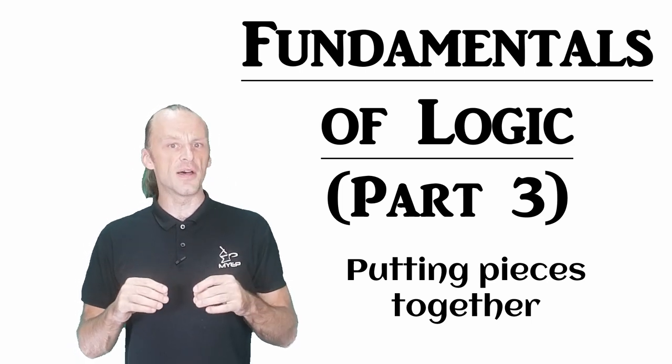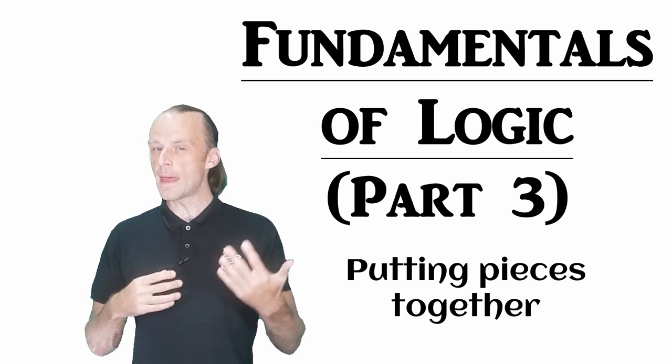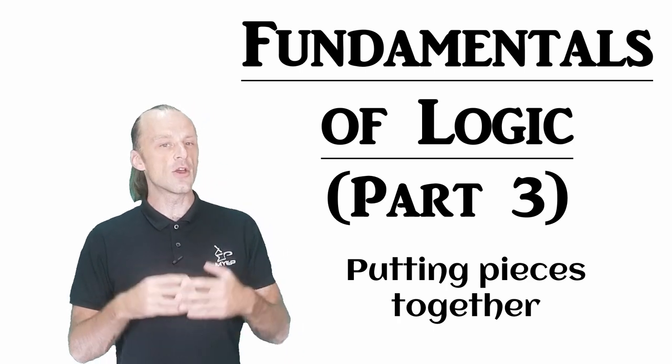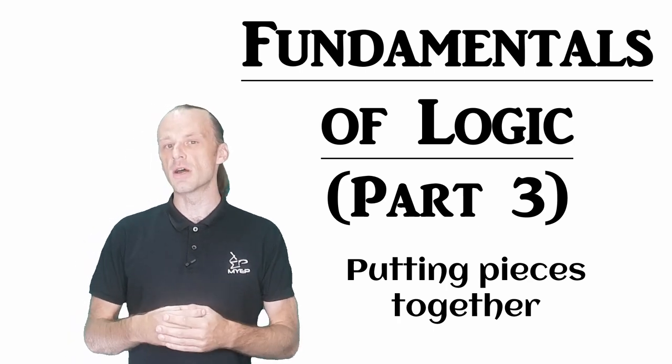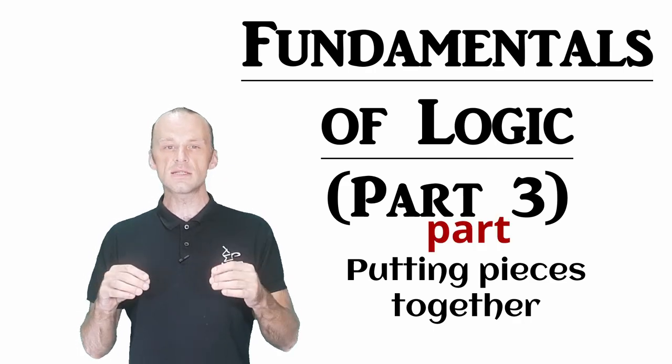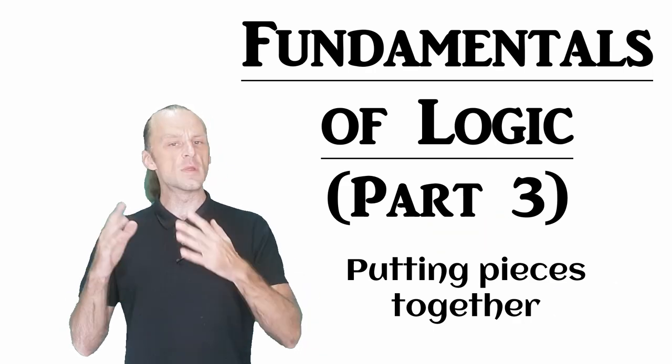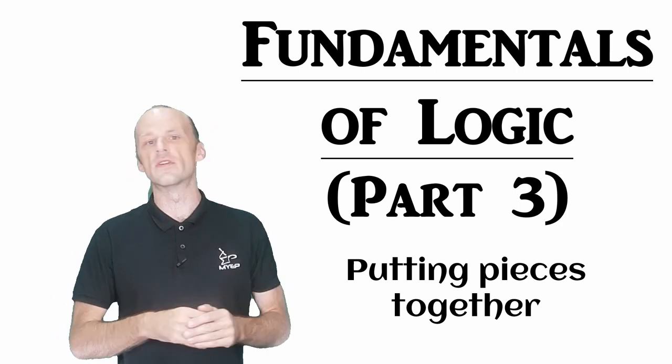In the first two parts, we built a set of symbols that we can use to make logical arguments, and we got a process that makes them work. In this part, we will start to see how all these parts move together from the beginning through to the end of an argument.